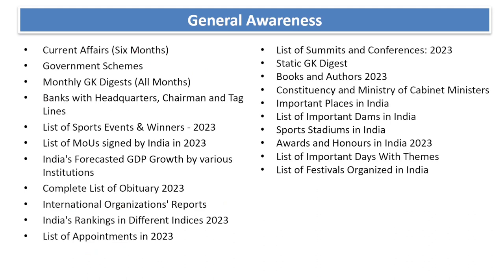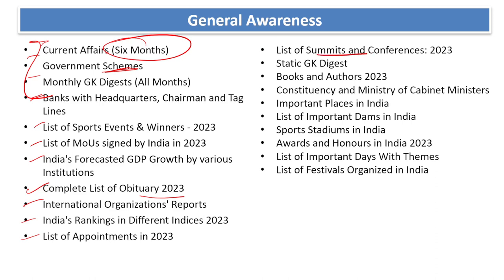For general awareness: last six months of current affairs, government schemes are really important, monthly GK digest, banks with headquarters, chairmen and taglines, list of sports events and winners, list of MOUs signed by India, India's forecasted GDP growth by various institutions, complete list of obituaries 2023, international organization reports, India's ranking in different indices, list of appointments in 2023, summits and conferences, books and authors, constituencies and cabinet ministers in India, important places in India, list of important dams, sports stadiums, awards and honours, list of important days with themes, and list of festivals organized in India.